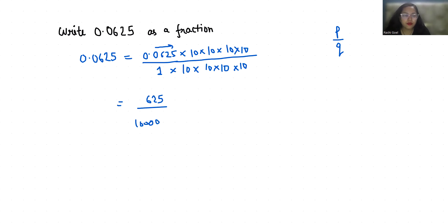Now it is in fraction form. We are going to convert to simplest form of fraction by dividing it by 5 both numerator and denominator. So 5 times 1 is 5, 5 times 2 is 12, 5 times 5 is 25 and here 2000.